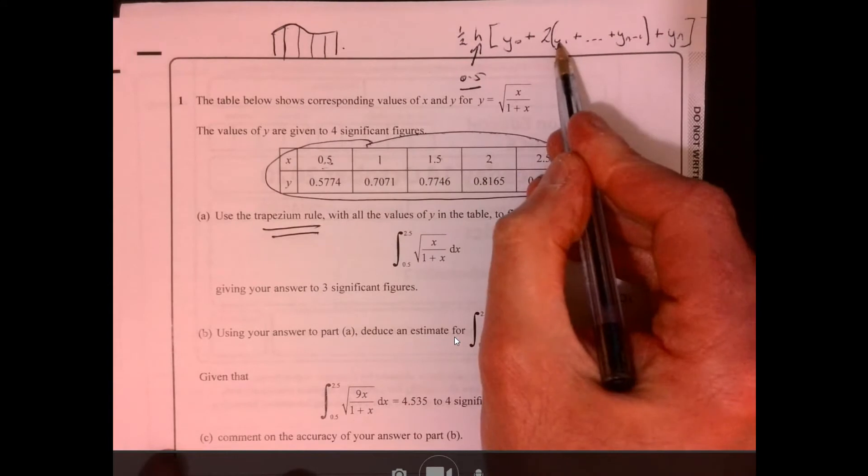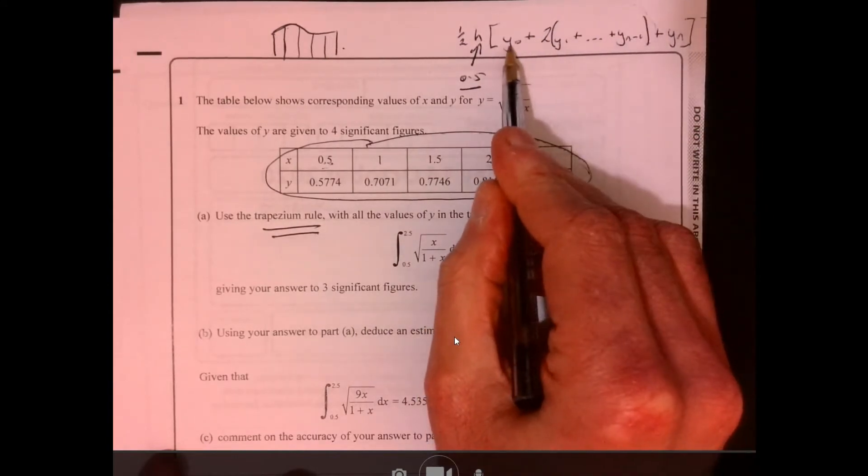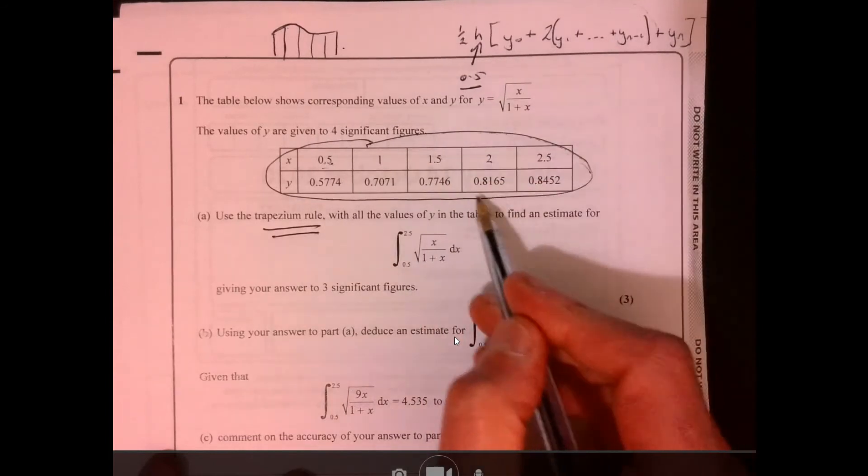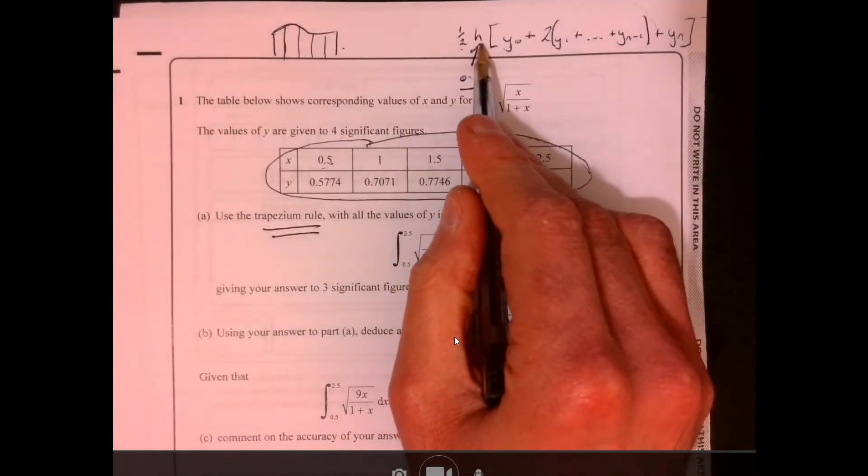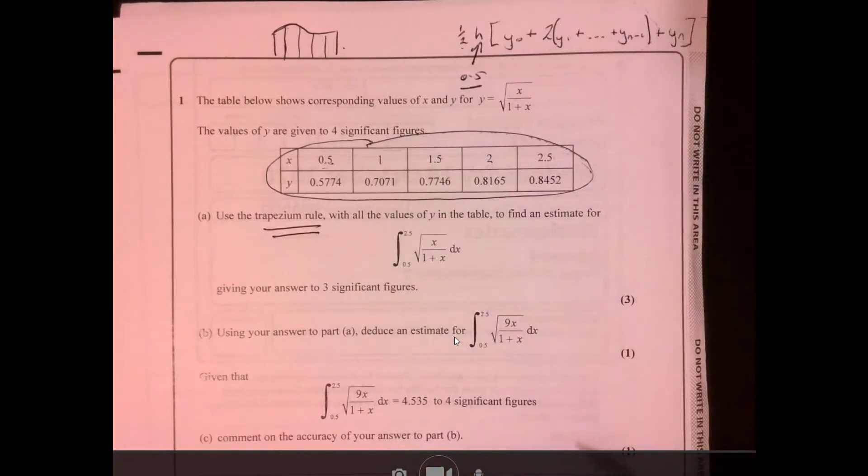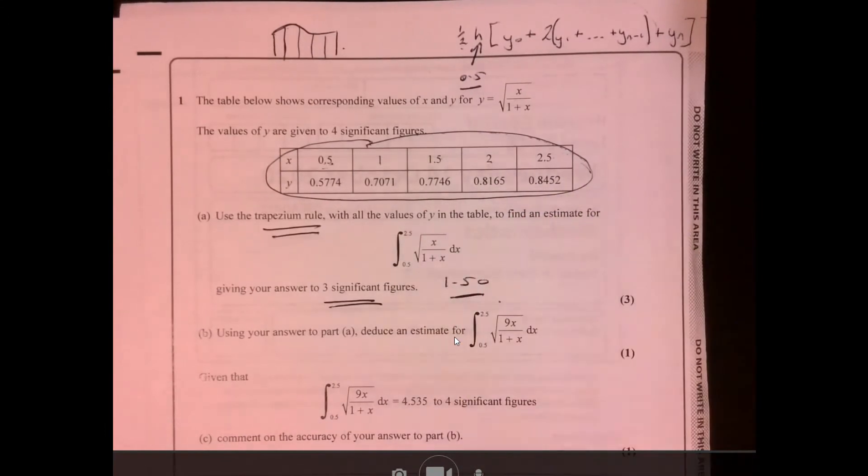When I do this, I tend to work it out in stages. I might do this bit first and then times it by two and then add the other bits and multiply it by half and that 0.5 there as well. Now when you do this, don't lose marks here. Let's say three significant figures and it's 1.50 to three significant figures.